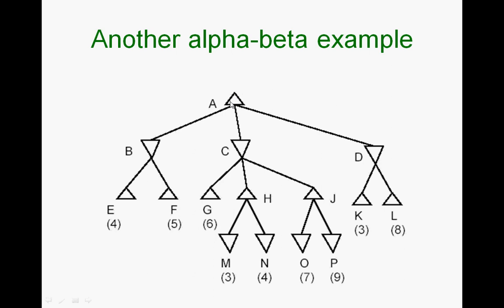You start from here, expand A, expand B, expand E. You find that it's a terminal node with value 4. As soon as you find that, B has a bound—B cannot be anything greater than 4, so B has a bound of less than or equal to 4.